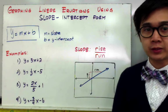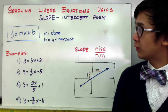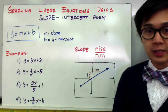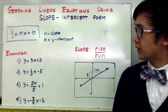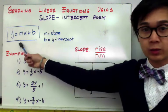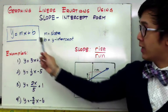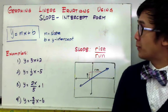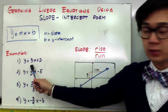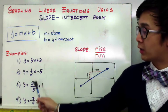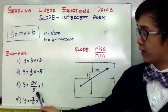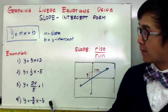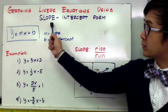Since we know how to convert our linear equation to slope-intercept form, this is a very useful form to graph a linear equation because we can use the slope and the y-intercept in constructing the graph. In slope-intercept form, the formula is y = mx + b, where m is our slope and b is our y-intercept. Examples include y = 3x + 2, y = (1/2)x - 5, y = (2x/5) + 1, and y = (-3/4)x - 6.